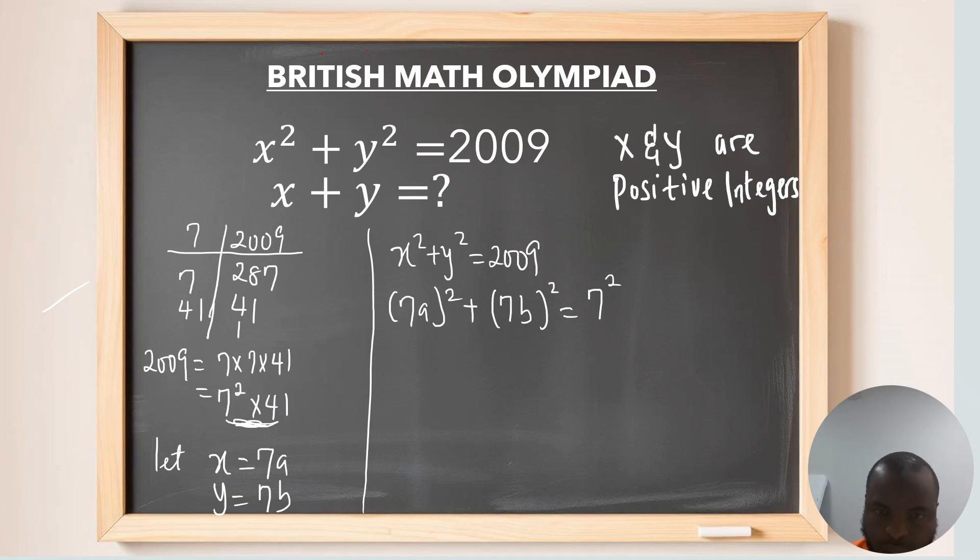Now, simplifying this parenthesis here, we're going to have 7 squared times a squared plus 7 squared times b squared equal to 7 squared times 41, dividing through by 7 squared. So, this equation can be written as a squared plus b squared equals to 41.